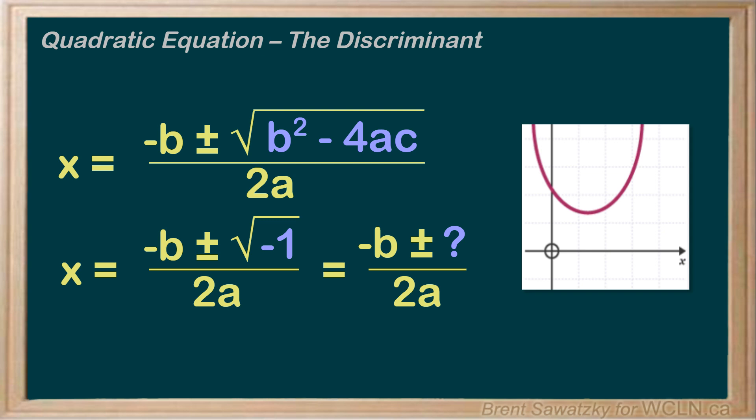So if we ever come up with a discriminant that comes out negative, we can stop there. We simply know, at that point, that the graph never crosses that x-axis.